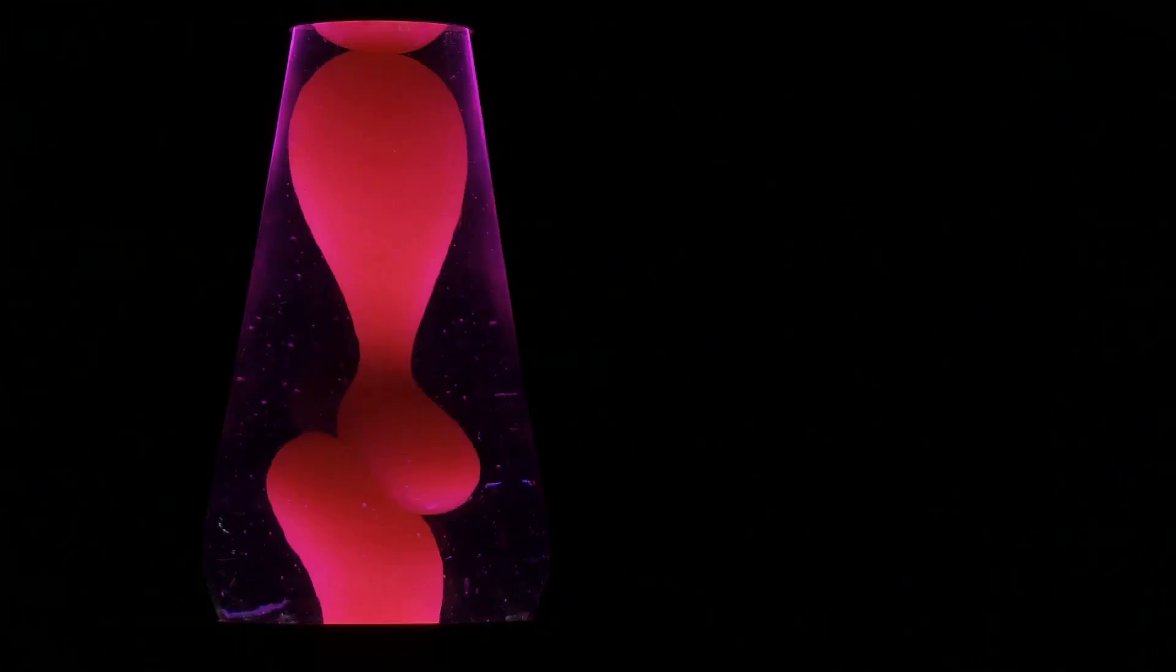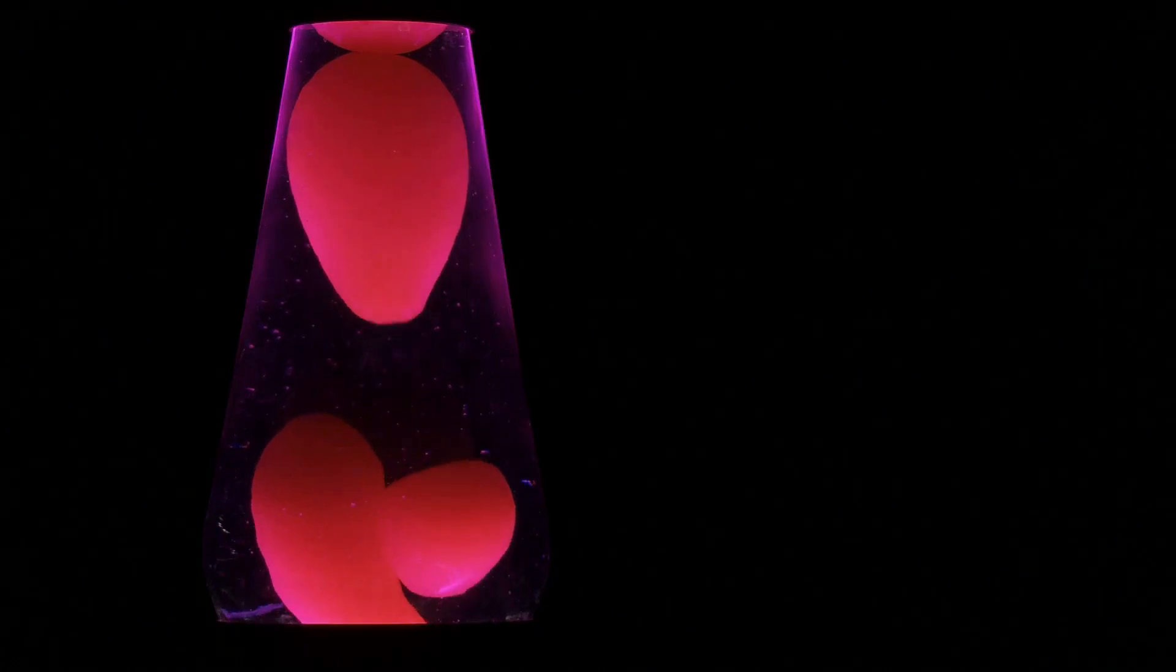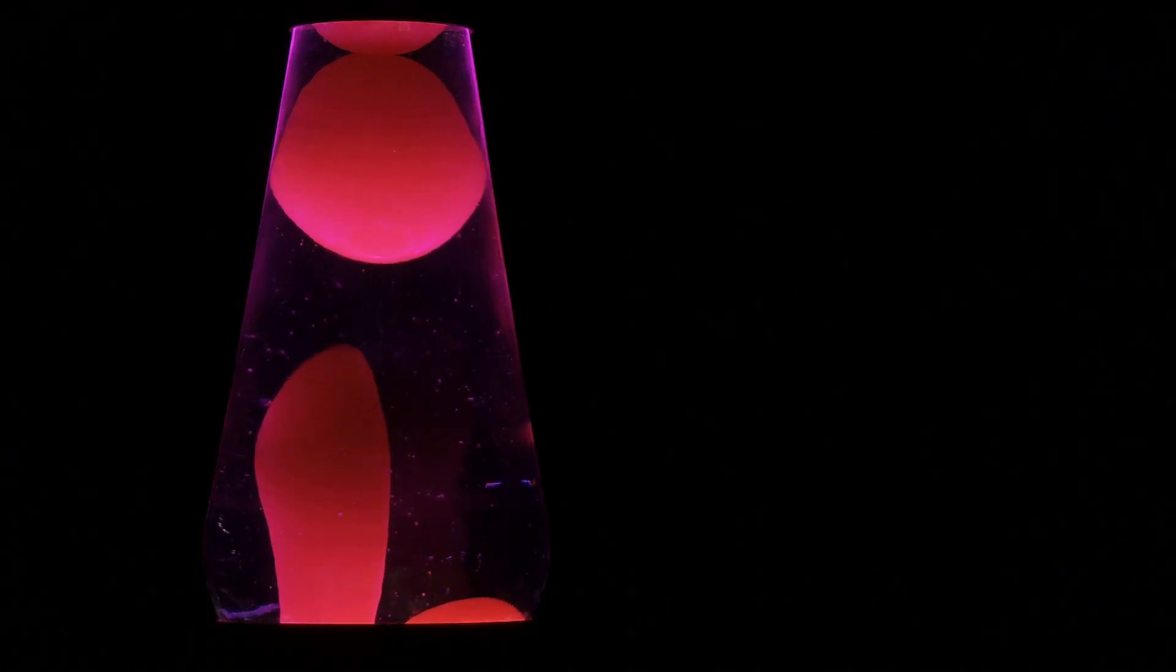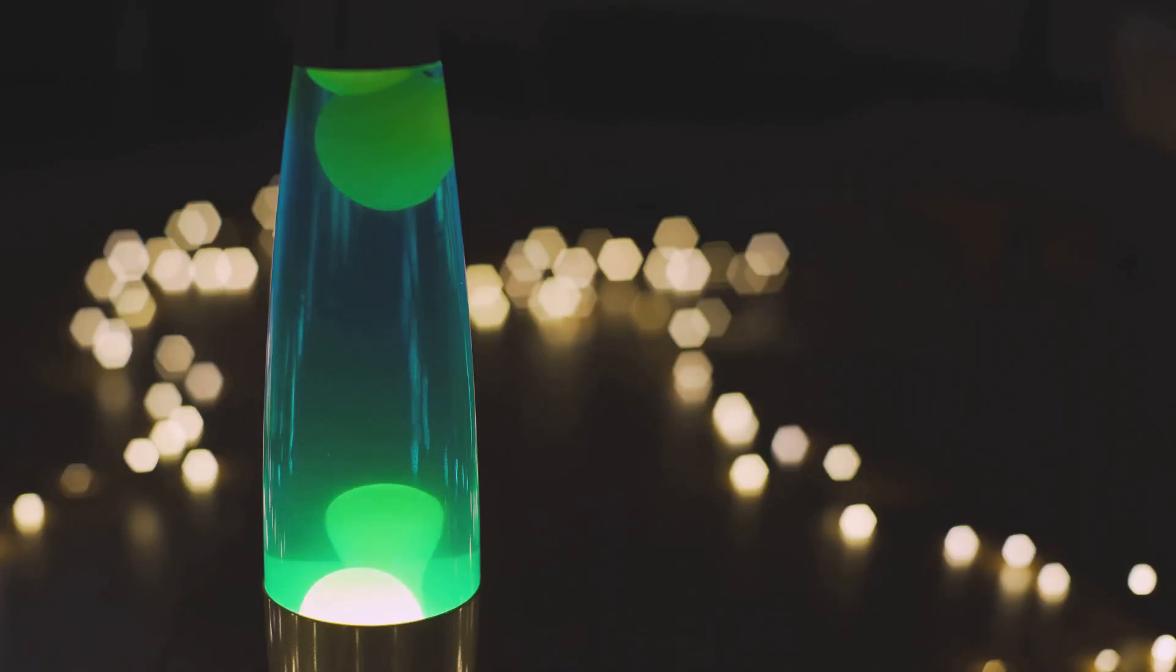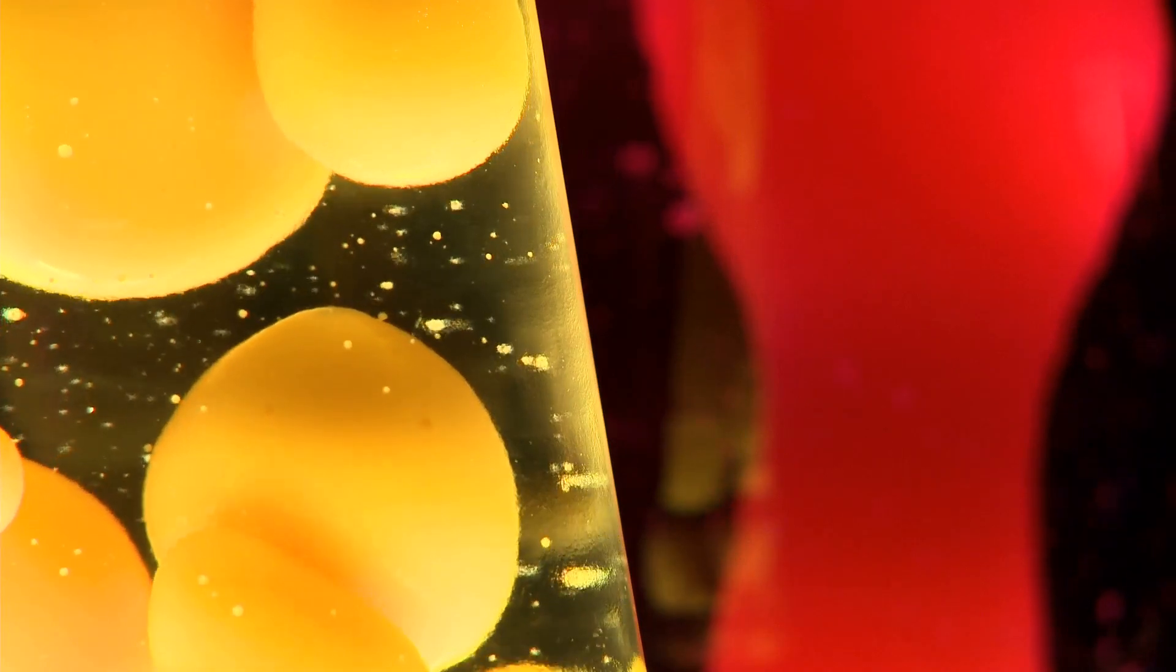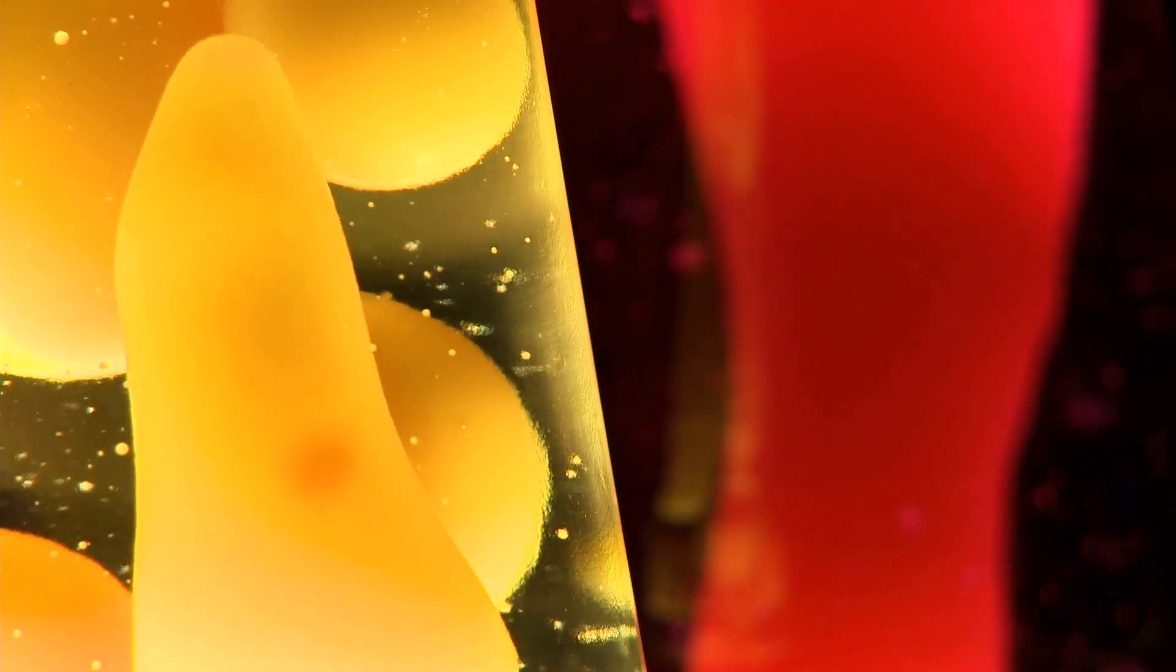The science of the swirl: So how does this thing actually work? The answer lies in the fascinating interplay of physics and chemistry. It's all about density and heat. These two factors are the key players in the mesmerizing dance of the wax blobs. When the lamp is off, the wax is a solid blob at the bottom. It sits there, dense and immobile, waiting for the magic to begin.